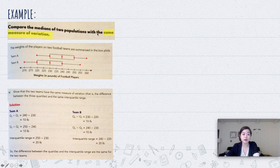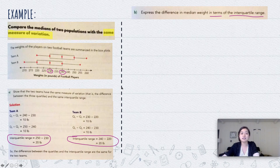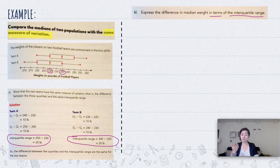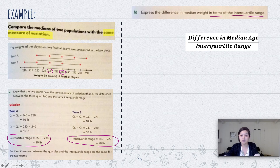Part B says to express the difference in median weight in terms of the interquartile range. We have to find the difference in median weight between Team A and Team B, then divide by the interquartile range (which is 20 for both). Make sure the difference is positive — take the bigger median minus the smaller median.